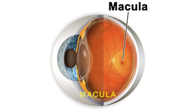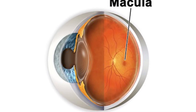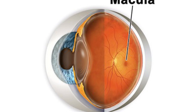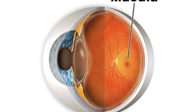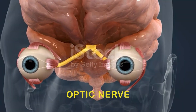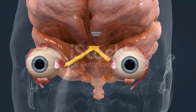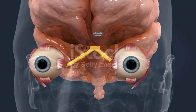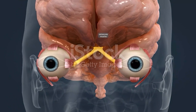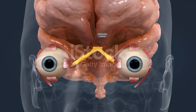The macula is a small area that's part of the retina. It's responsible for central vision and helping you see fine details and color. The optic nerve is behind the retina. It carries signals from the retina to your brain, which then interprets that visual information to tell you what you are seeing.